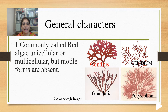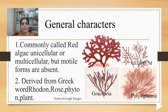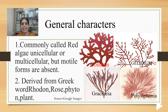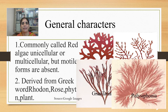Commonly called red algae, the thalli are unicellular or multicellular, but motile forms can never be encountered in this group. The name has been derived from the Greek words: rhodon means rose, phyton means plant — the red plant. Some examples of red algae are Chondrus, Gelidium, Gracilaria, and Polysiphonia.